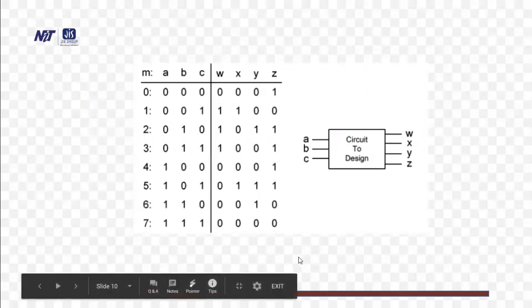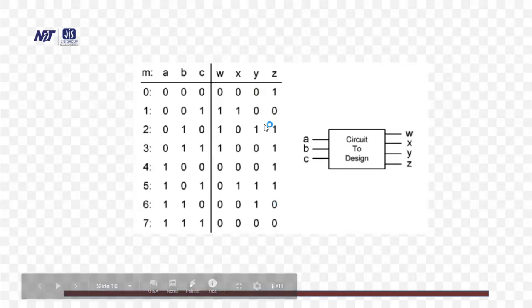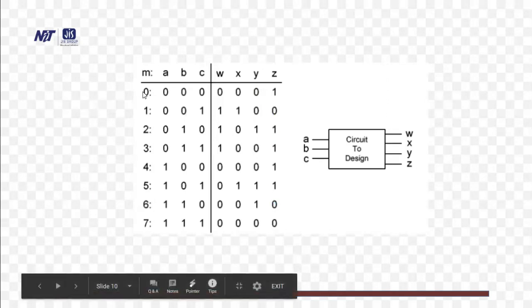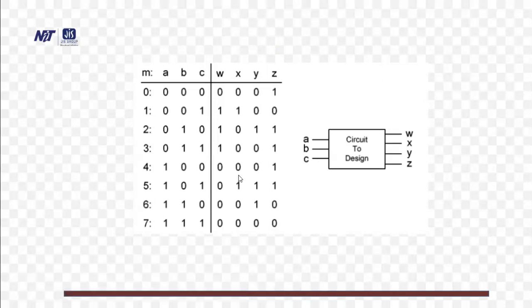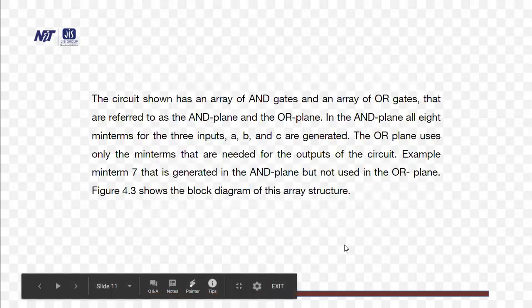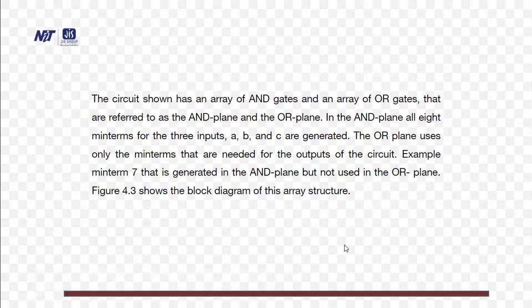Min term 0 is represented by A=0, B=0, C=0, and min term 7 corresponds to all inputs equal to 1. The corresponding outputs W, X, Y, Z show values for each min term — for min term 0, only Z is activated; for min term 1, W and X are activated, and so on; and for min term 7, all are 0. The circuit has an array of AND gates and an array of OR gates, referred to as the AND plane and OR plane. In the AND plane, all eight min terms for three inputs A, B, and C are generated. The OR plane uses only the min terms that are needed for the circuit output. Min term 7 is generated in the AND plane but not used in the OR plane, as shown in the structure.